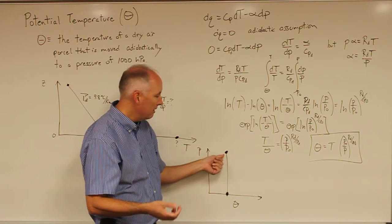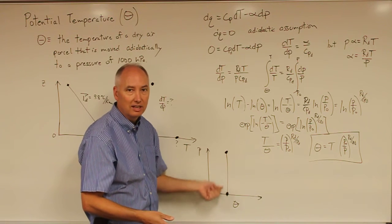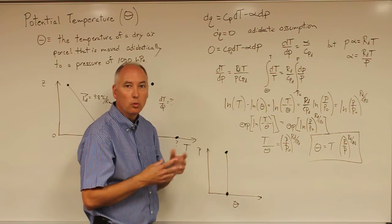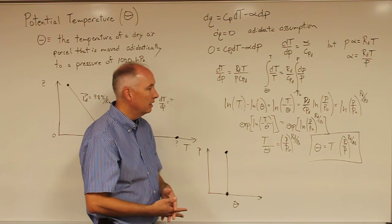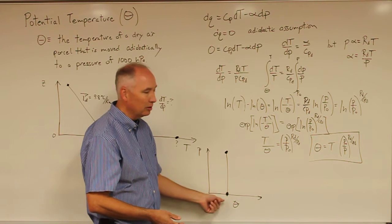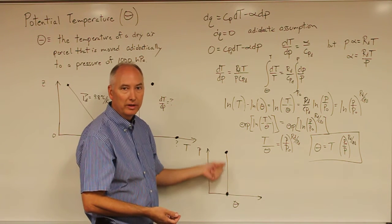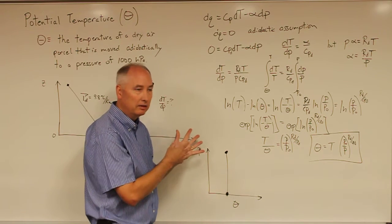either up or down, its potential temperature stays exactly the same, which gives us a way to easily determine the temperature of an air parcel with height by using a conserved variable.